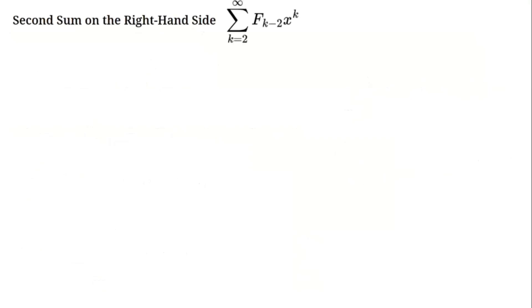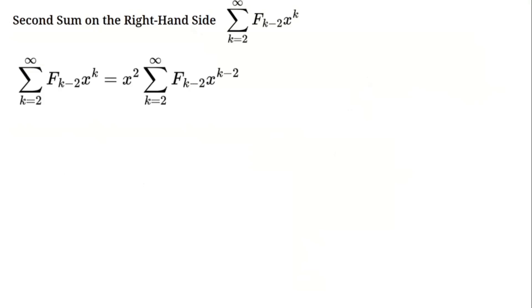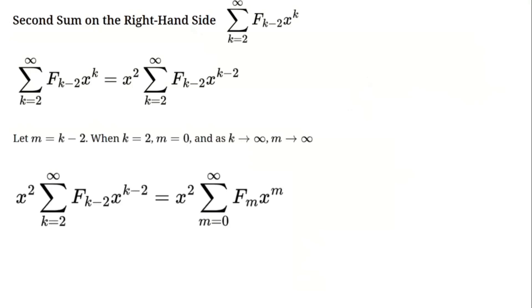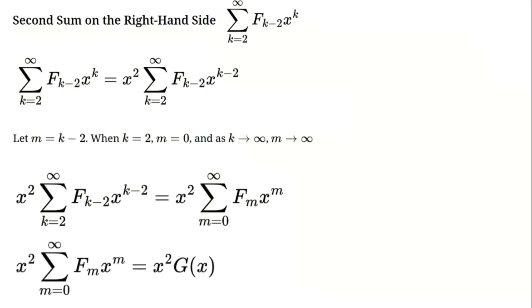Similarly, the second sum on the right-hand side: the sum from k=2 to infinity of f(k-2)·x^k. We can factor out x² and rewrite this as x² times the sum from k=2 to infinity of f(k-2)·x^(k-2). If we let m = k-2, this becomes x² times the sum from m=0 to infinity of f(m)·x^m, which is exactly g(x). So this simplifies to x²·g(x).